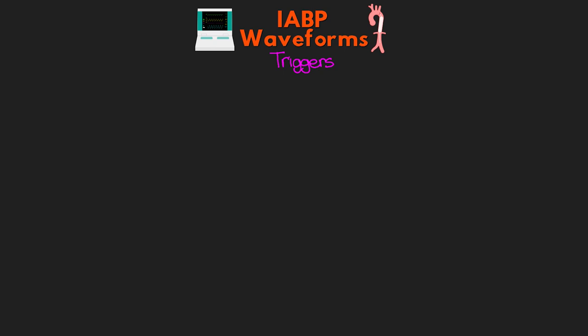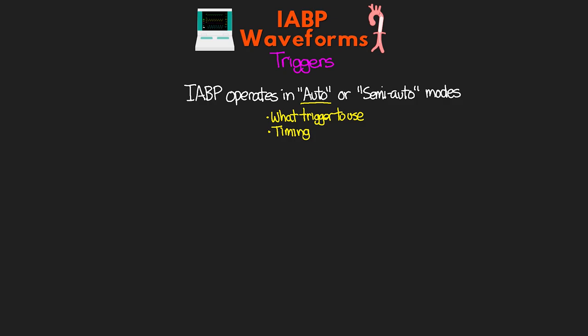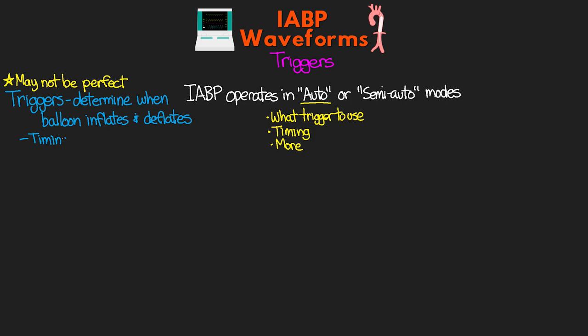The balloon pump can operate in either auto or semi-auto mode. Typically we keep it in auto mode, but there are times where we need to optimize the operation of the balloon pump itself. In some places you may not be able to place it in semi-auto mode and fine tune things, so make sure you know your facility policy. In auto mode, the balloon pump is going to determine on its own the best way to run — what trigger to use, adjust timing, and other things. It usually does a pretty good job. The triggers are what actually determine when our balloon inflates and deflates. The timing of inflation and deflation in relation to the trigger may need to be adjusted, though in auto mode the balloon pump automatically makes these adjustments.